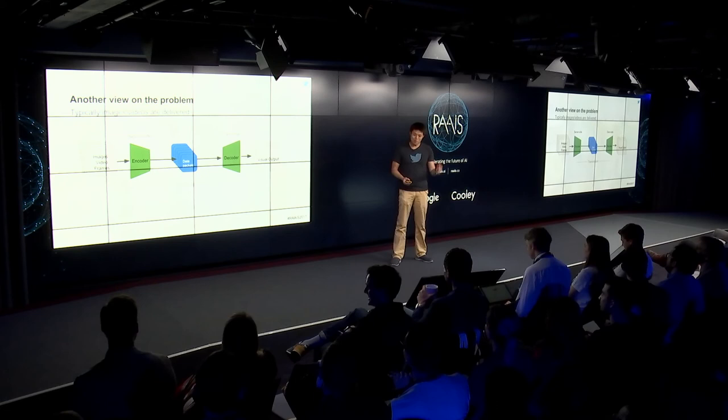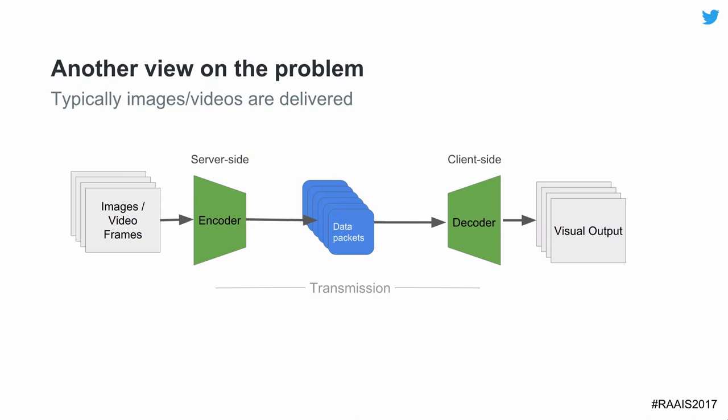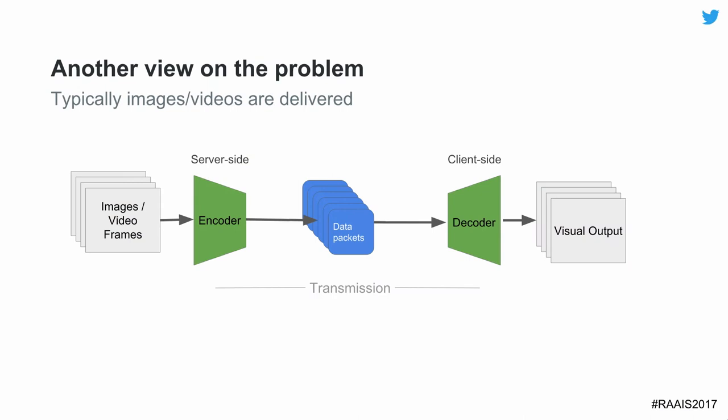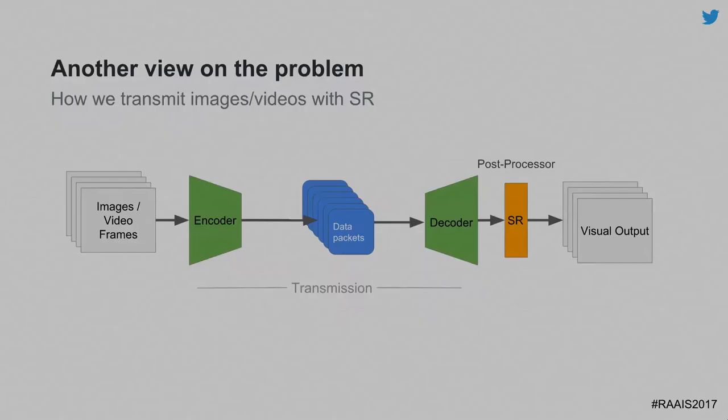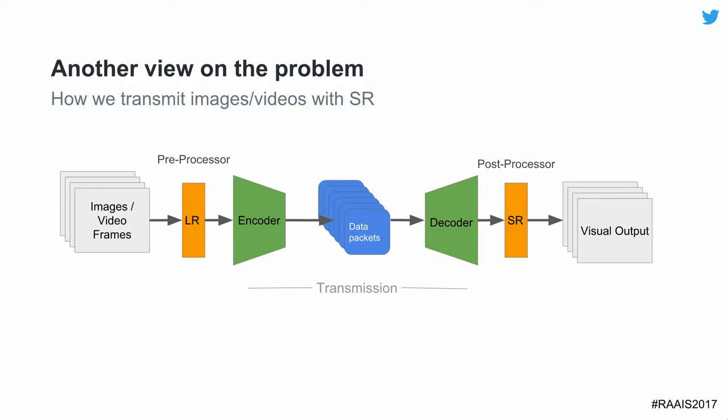One final topic: the overall view of compression and super resolution. Typically for video data transmission, you have an encoder on the server side and a decoder on the client side. What super resolution is doing is acting as a post-processor. You lower the resolution as a pre-processor, encode it to reduce the amount of data you need to send, then on the other end super-resolve it to recover as high a quality as possible. This achieves compression, but it's really just the first step.